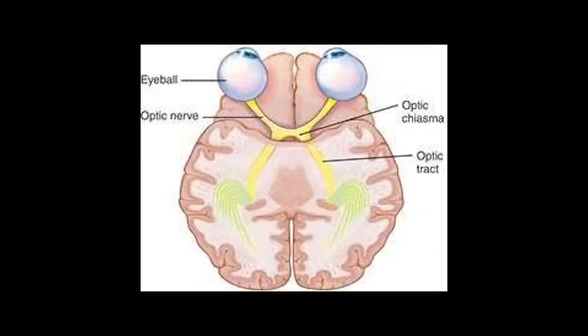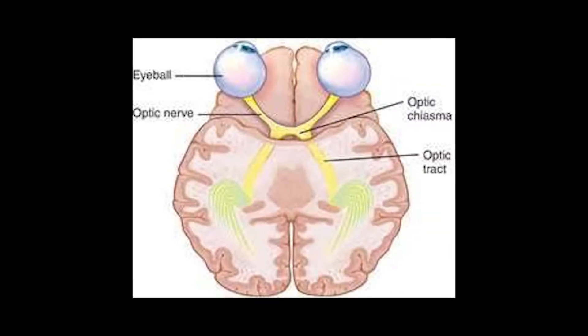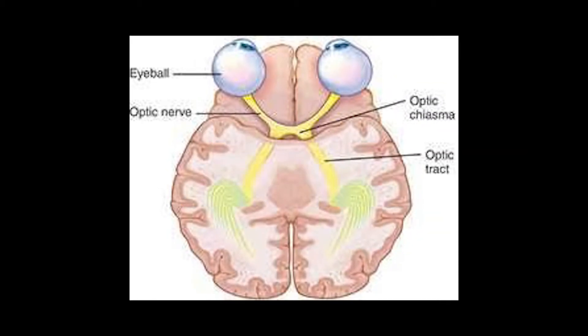The stimulated cone cells send information to the visual cortex of the brain via the optic nerve, which processes the information and allows you to see and perceive color.